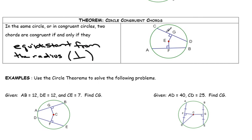that means that CD is congruent to AB. Which also means that arc CD is congruent to arc AB.